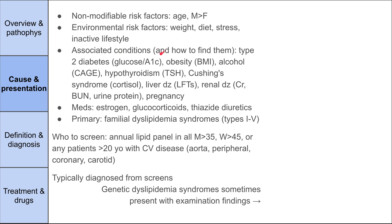There are several associated conditions. Type 2 diabetes, screened with blood glucose or hemoglobin A1c, is associated with hypercholesterolemia — though it's not entirely clear if it's causatory or if a poor diet and inactive lifestyle cause both. Obesity is associated, screened with BMI. Chronic alcohol abuse, screened with a CAGE screen. Hypothyroidism, noticed on TSH. Cushing syndrome, found with serum cortisol. Liver disease seen with LFTs, renal disease with creatinine, BUN, and urine protein. Pregnancy is also associated.